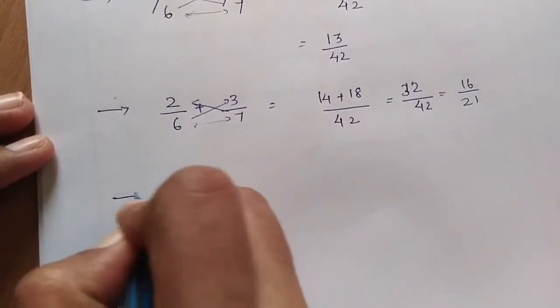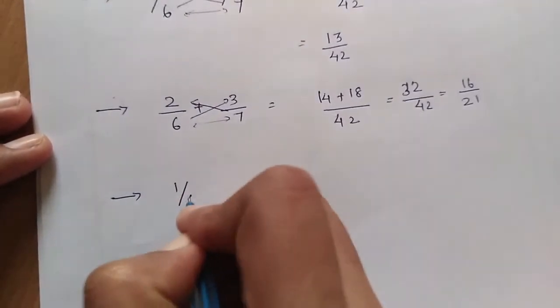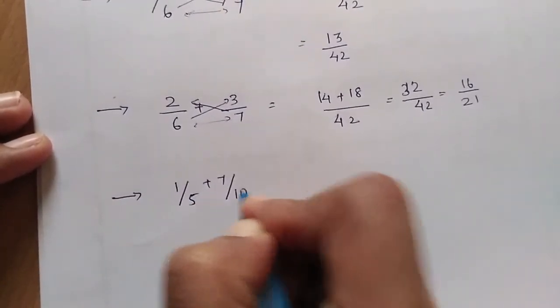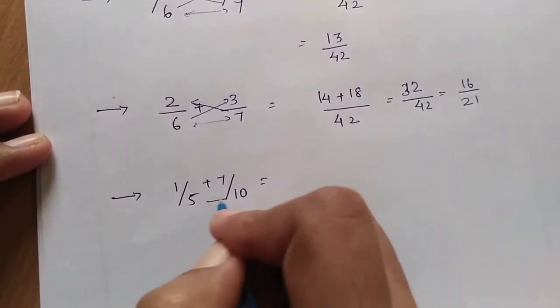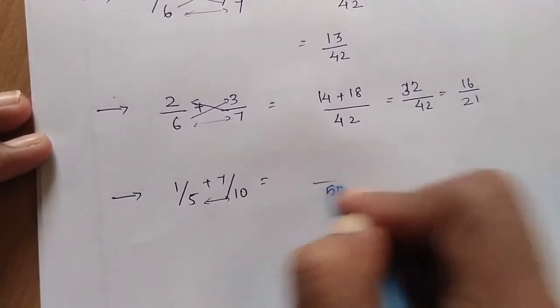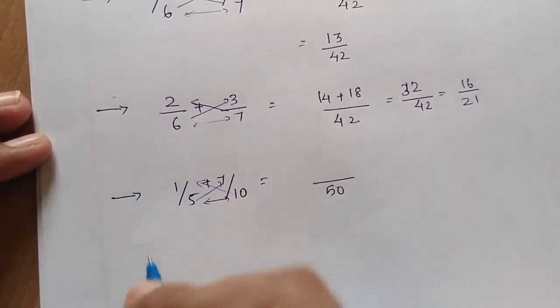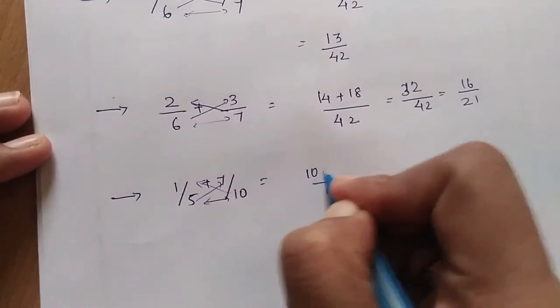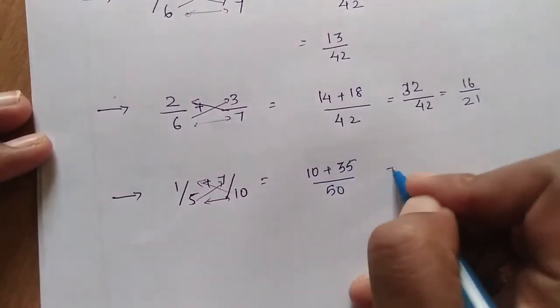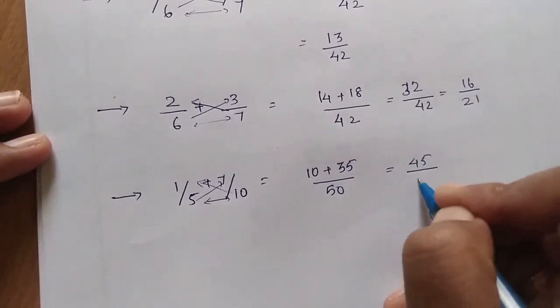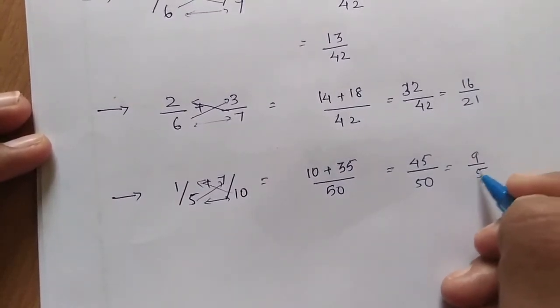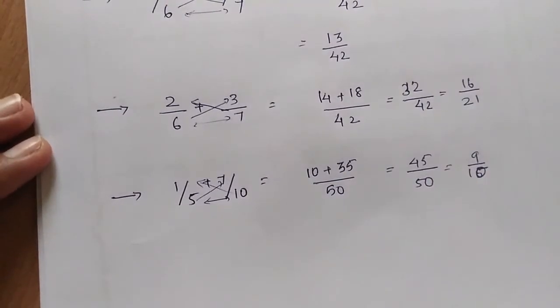And the next example is 1/5 plus 7/10. Cross multiply the denominators: 50. Then cross multiply: 10 plus 35 which equals 45/50, which equals 9/10.